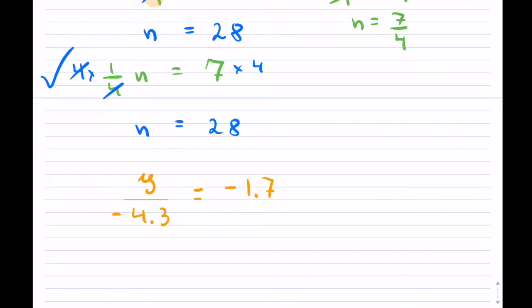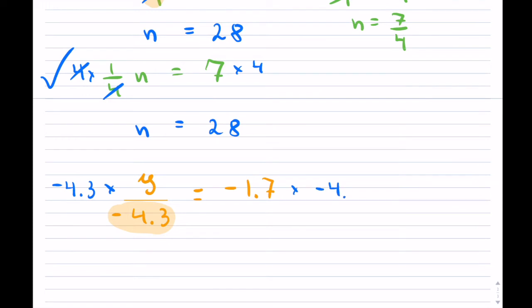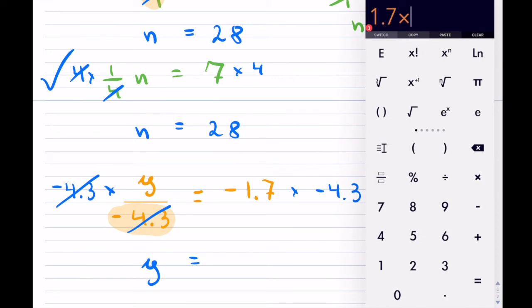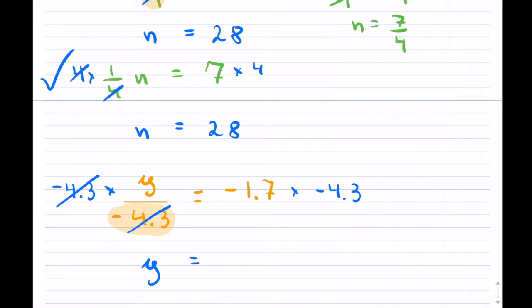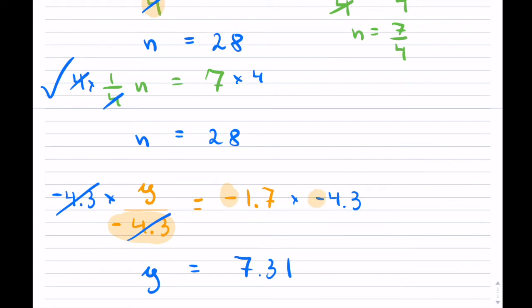This and this cancel — negative divided by a negative is positive — so you're left with y. On the right-hand side, negative times a negative is a positive. You take 1.7 multiplied by 4.3, which equals 7.31, and it is positive because of the two negatives. So that's another little change that may happen.